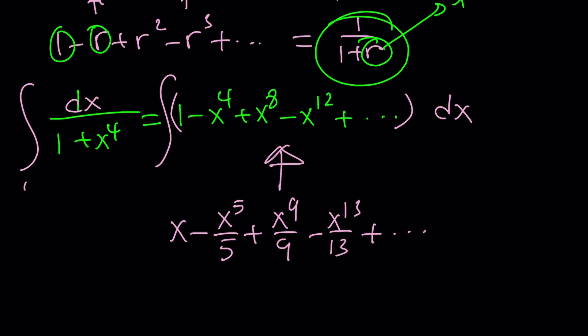Since this is 0 to 1, then this will be 0 to 1. And when you replace x with 1, you're going to get 1 - 1/5 + 1/9 - 1/13, plus dot dot dot. When you replace x with 0, you get 0, subtract 0. It's not going to matter. So forget about it. And this is the very sum we are trying to evaluate.